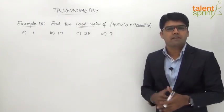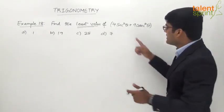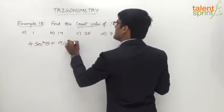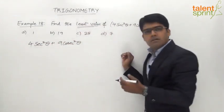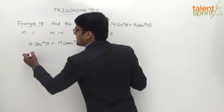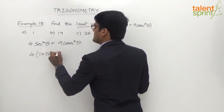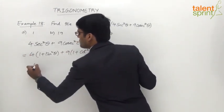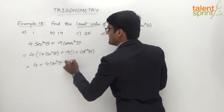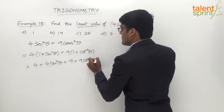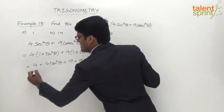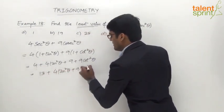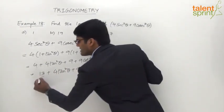Let's see how to get the minimum value. The given equation is 4sec²θ + 9cosec²θ. We use basic trigonometric identities to expand: sec²θ = 1 + tan²θ and cosec²θ = 1 + cot²θ. Expanding gives us 4 + 4tan²θ + 9 + 9cot²θ. Taking the sum of the integers: 4 + 9 = 13, leaving us with the two terms 4tan²θ + 9cot²θ.